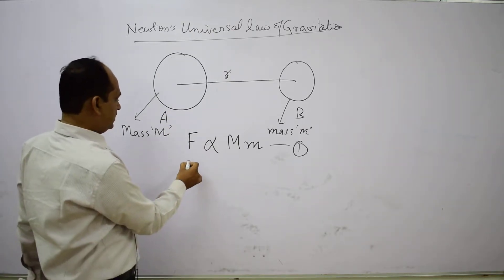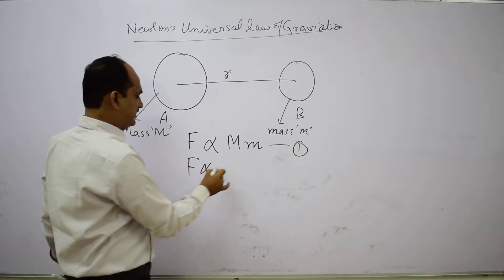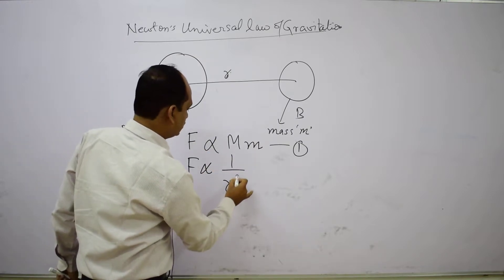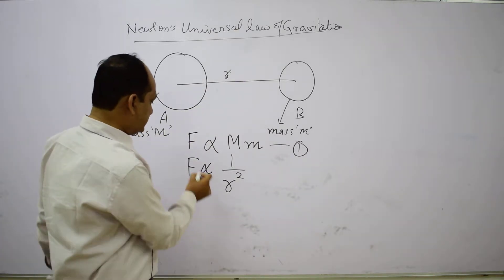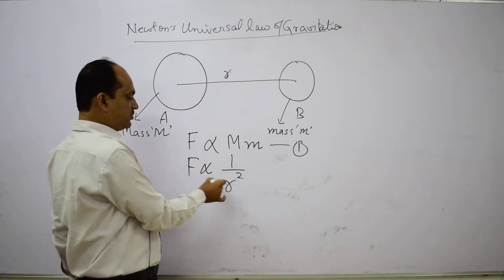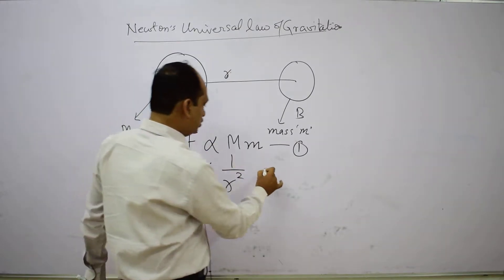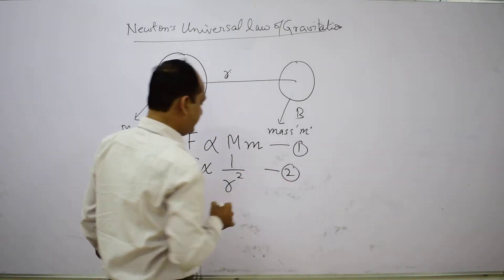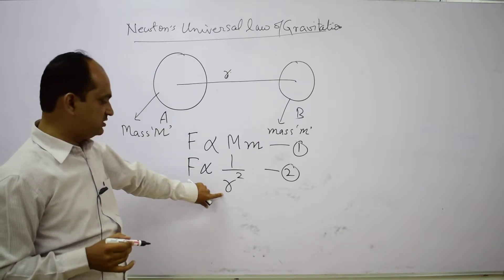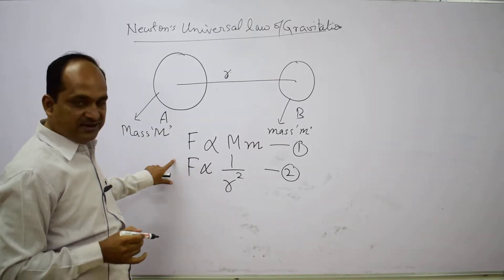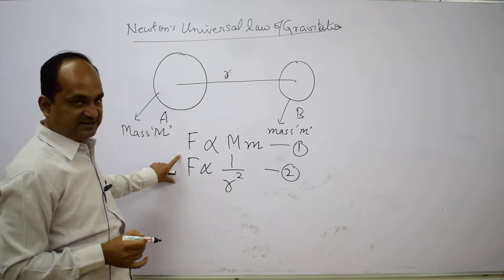The second part: the same force is inversely proportional to the square of the distance between the bodies. So we can write F is inversely proportional to 1 upon R square. From this we conclude that if R is increased, F will be decreased, and if R is decreased, F will be increased.